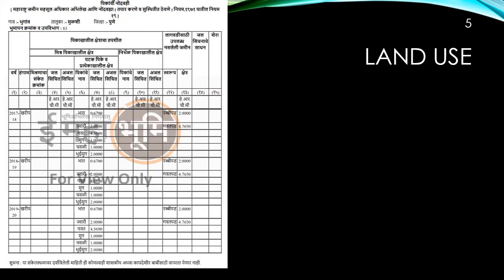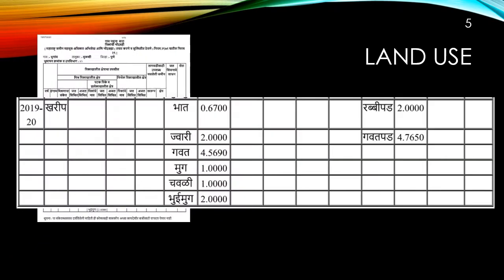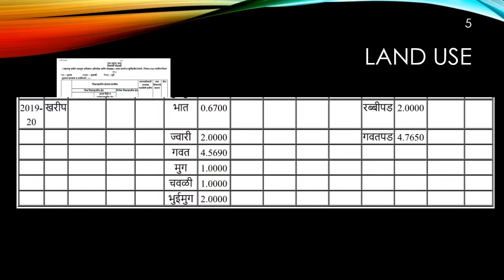This is the statement for the last three years: 2017-18, 2018-19, and 2019-20. The produce is cropped or harvested in kharif season. The details include jawari, gawat (grass), moong, groundnut, and some part of the land is also used for cultivating rice. So in essence this land is used for cultivation according to the village records.